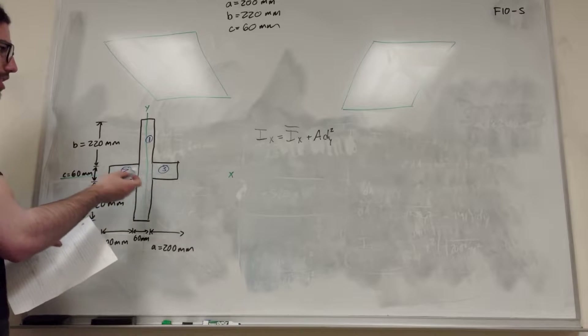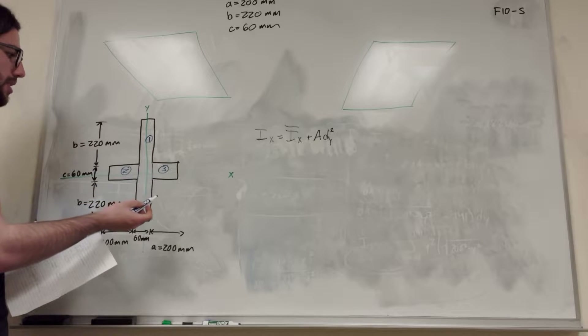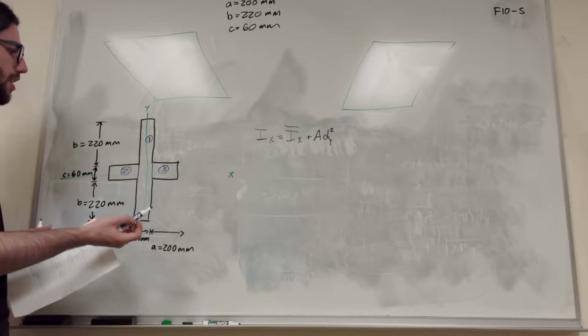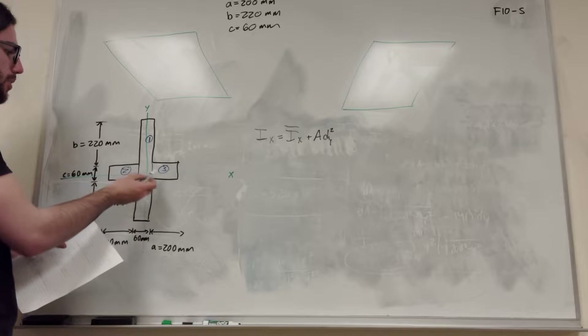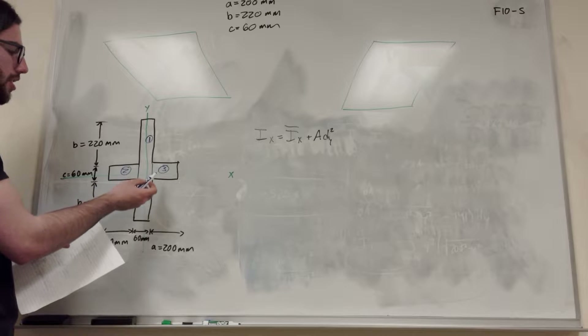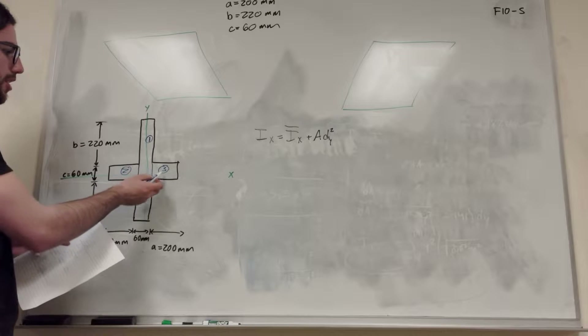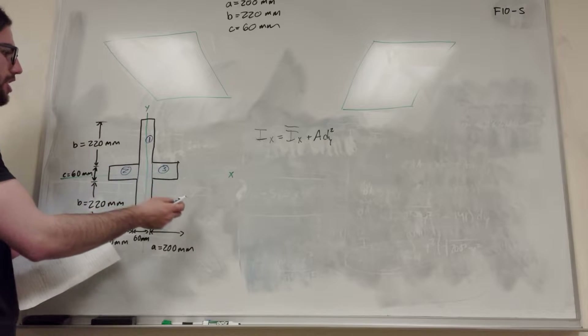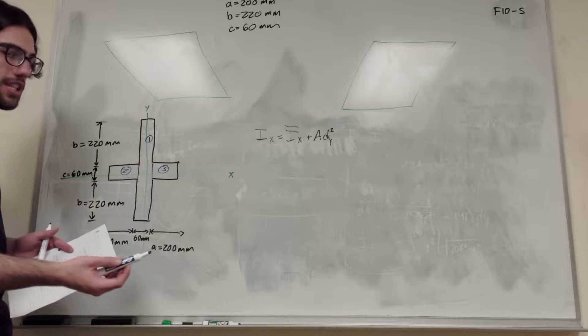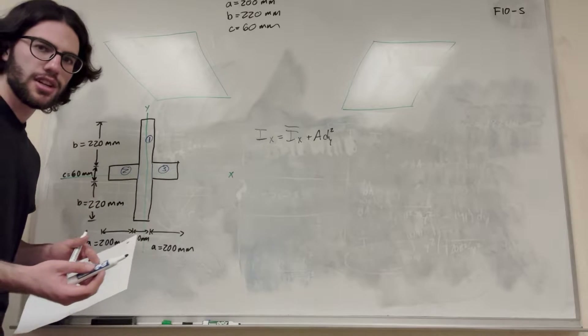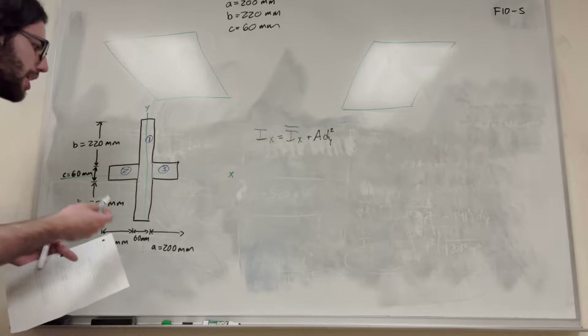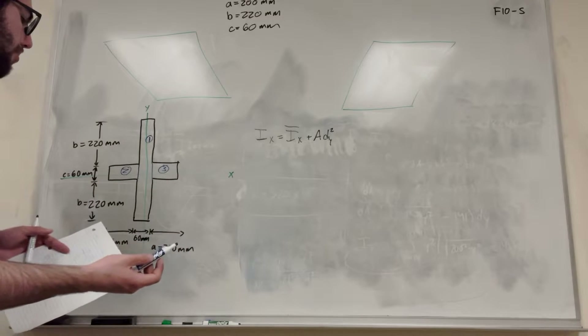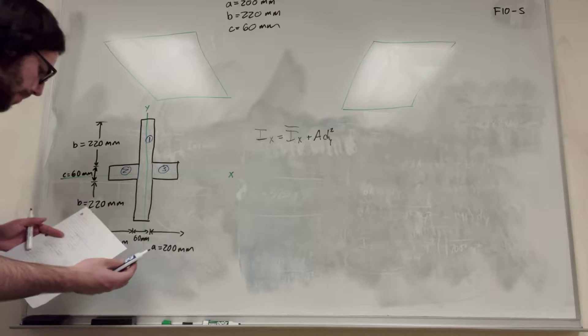So we need to find the moment of inertia for each one of these shapes. Luckily for us, rectangles 2 and 3 are symmetrical — across the x-axis they're going to have the same moment of inertia, and across the y-axis they're also going to have the same moment of inertia. So just make sure to count two of them for each one.